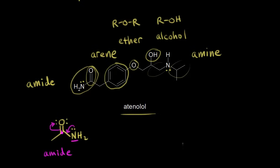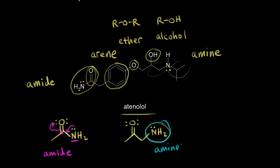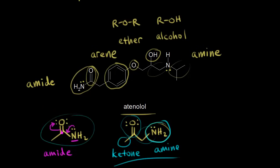If we move the nitrogen further away from the carbonyl, we no longer have resonance — you can't delocalize the lone pair on nitrogen — so now we do have an amine. That compound would be a ketone and an amine, while the other is an amide. Make sure to know the difference between these two functional groups — many students mix up amides and amines.